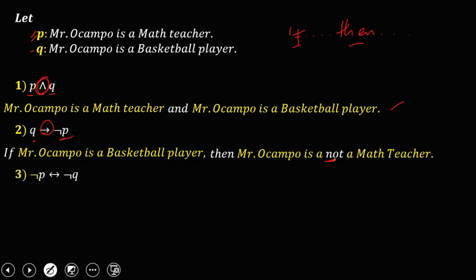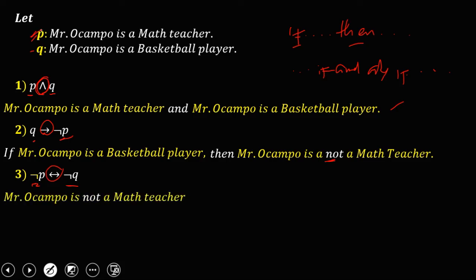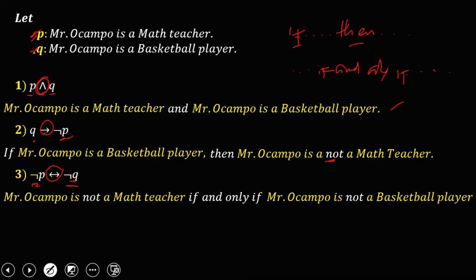For the third equation, we have not P biconditional not Q. For the biconditional, it reads: 'first statement if and only if the second statement.' The first statement is the negation of P: 'Mr. Ocampo is not a math teacher,' if and only if the negation of Q — not Q — 'Mr. Ocampo is not a basketball player.'